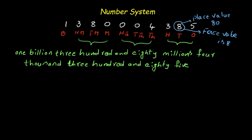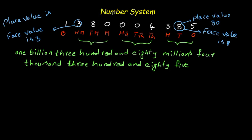Do you know what is the face value of this number? The face value here is 3. And the place value — 3 is in the hundred millions place — so the place value is 3 into 100 millions, that is 300 millions.